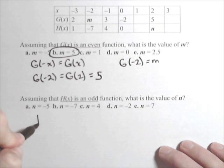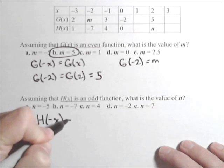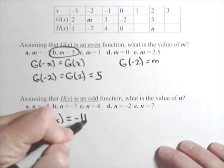H of x is an odd function. So, once again, it's important to know the definitions. H of negative x, if it's odd, equals negative h of x.